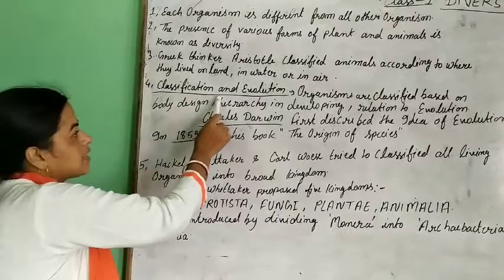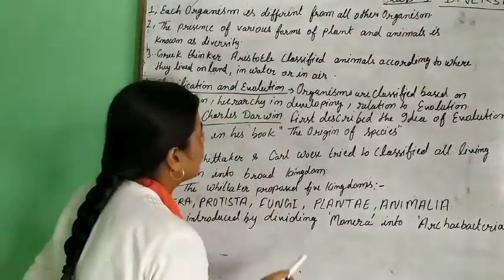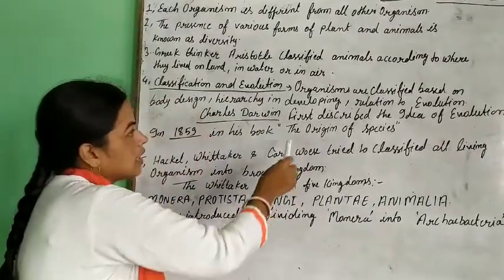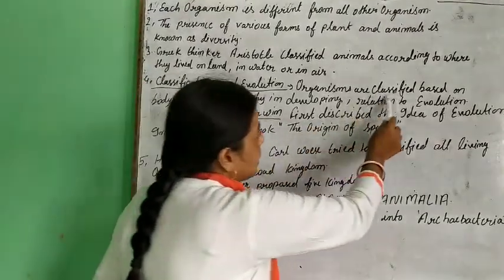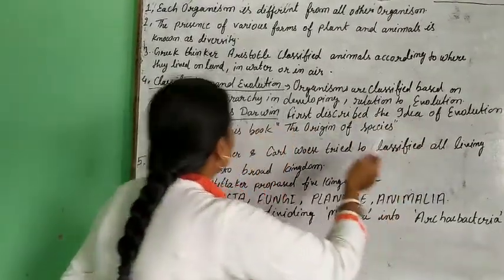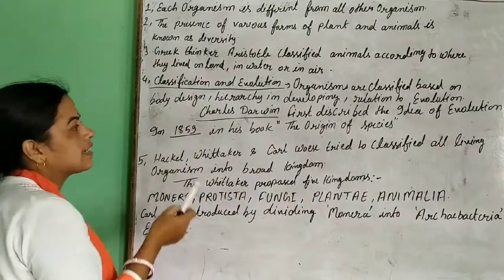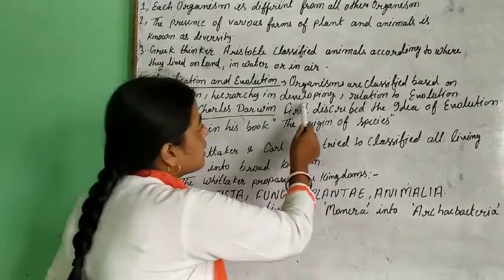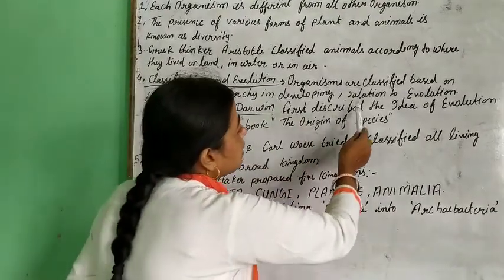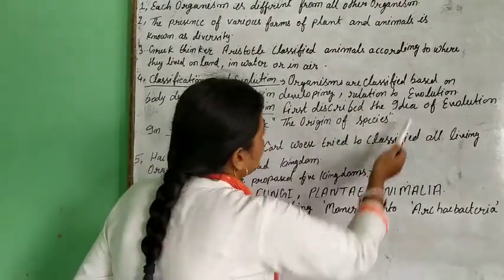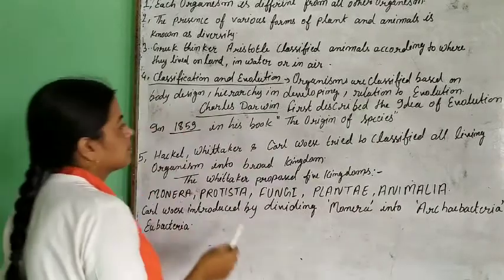Classification of evolution: organisms are classified based on body design, heredity, and their developing relation to evolution.